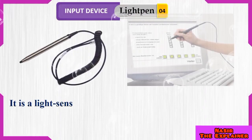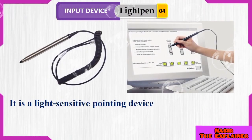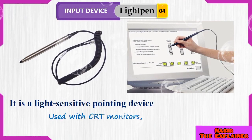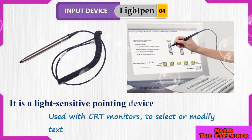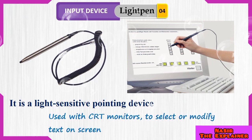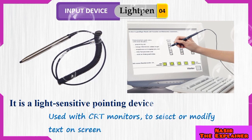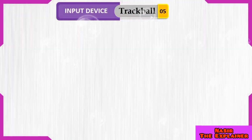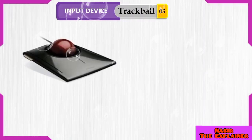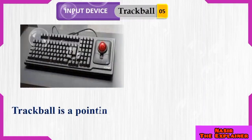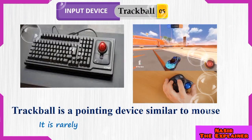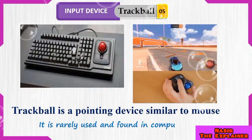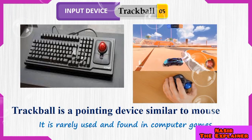Light pen is a less familiar input device. It is light sensitive and is used to select different items on the CRT monitor. Trackball is also an input device which is a pointing device and is rarely used. It is used in different video games and is just like a mouse that is upside down.